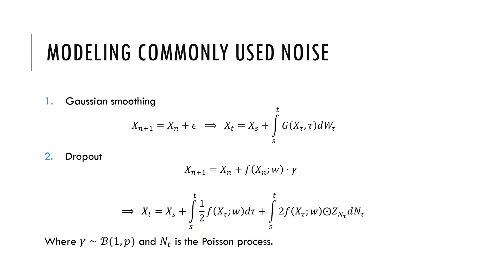Here I give you two instances. Case 1 is Gaussian smoothing where epsilon follows a zero-mean normal distribution. We could generalize it to a stochastic integral on the right-hand side. Case 2 is dropout where gamma follows Bernoulli distribution. We could still rewrite it to a continuous form, but this time it would be integral to a Poisson process rather than the Brownian motion.